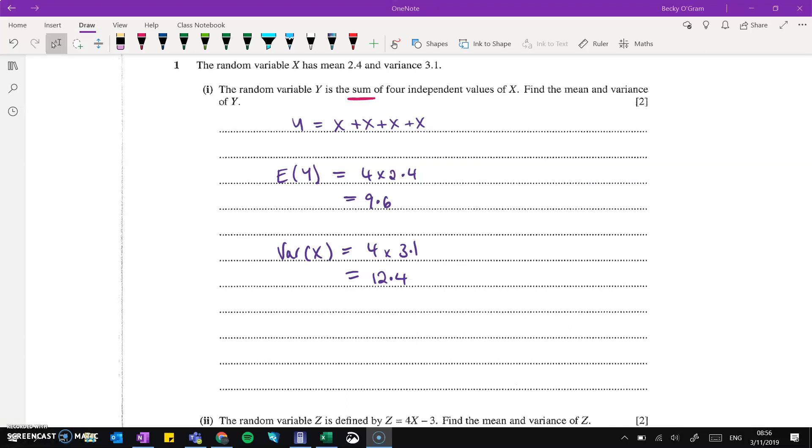Question one is about a random variable x. Our first thing is that we have the sum of four independent values of x. That means we are adding x up four times, not timesing x by 4. That makes a difference. So the mean gets multiplied by 4. The variance also gets multiplied by just 4, not 4 squared.